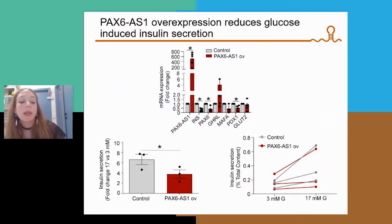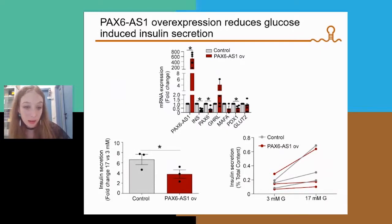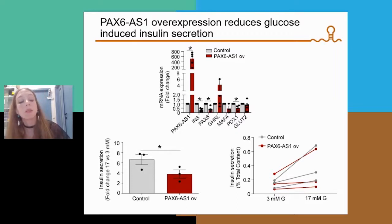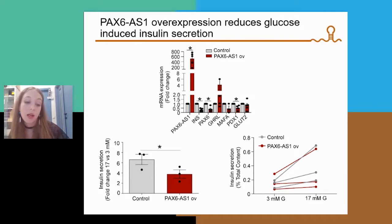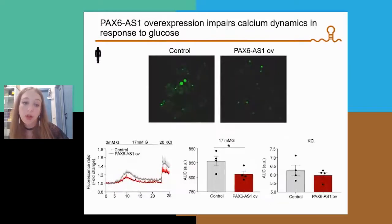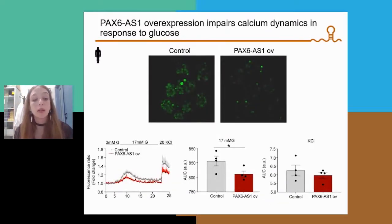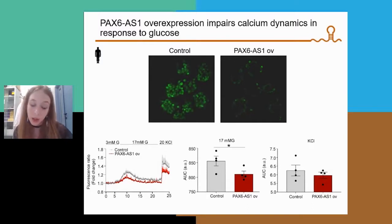Next, we overexpressed Pax6-OS1 in human islets using lentiviral vectors, and observed that Pax6-OS1 overexpression reduced the expression of insulin and other beta cell signature genes, and also decreased glucose-induced insulin secretion. Consistent with this, it also decreased intracellular calcium dynamics.